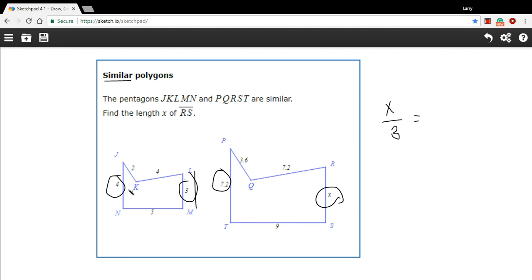Now I'm going to compare pt to jn. So I'll put the side from the large figure on top, 7.2. And the side from the smaller figure on the bottom, 4. Okay. So there are our two ratios.